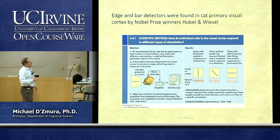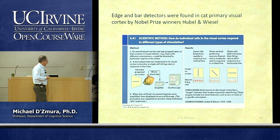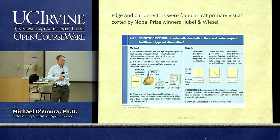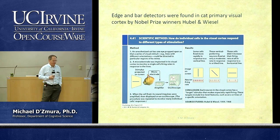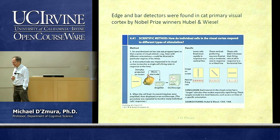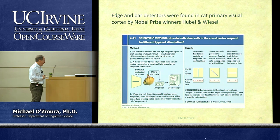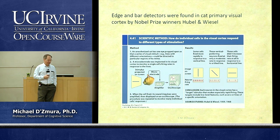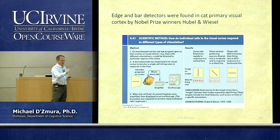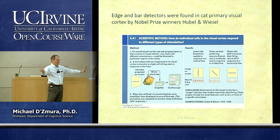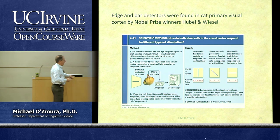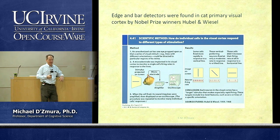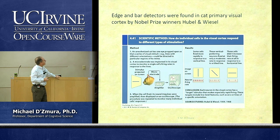Moving from the retina up through LGN, you come to primary visual cortex, area V1. For a long time, people had no idea what V1 was doing because they didn't know what a good light stimulus for V1 neurons would be. They tried shining round spots and blobby pictures — everything but the right stimulus. Hubel and Wiesel discovered what kinds of stimuli excite neurons in area V1, and for this and other work they received the Nobel Prize.